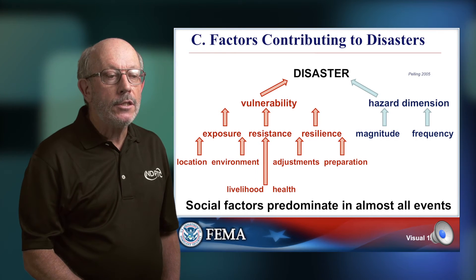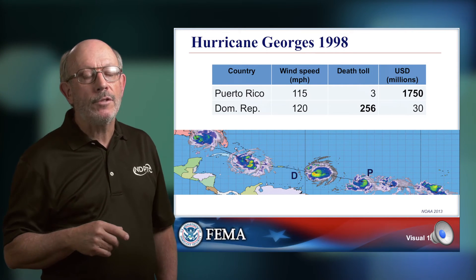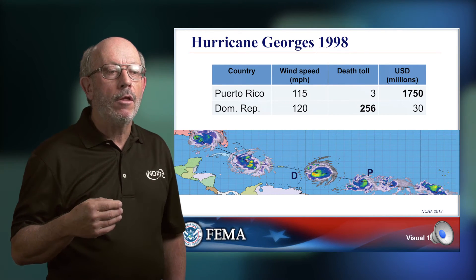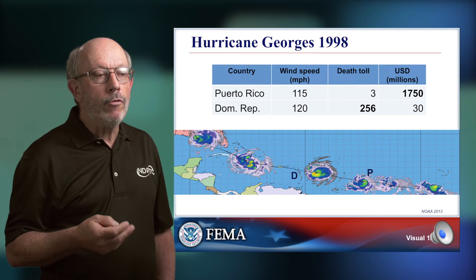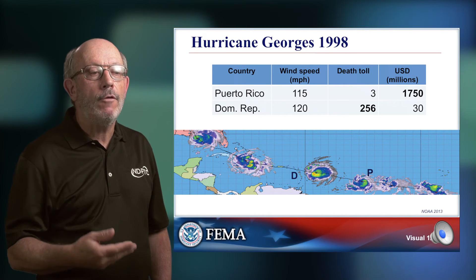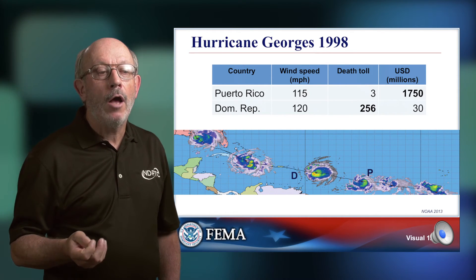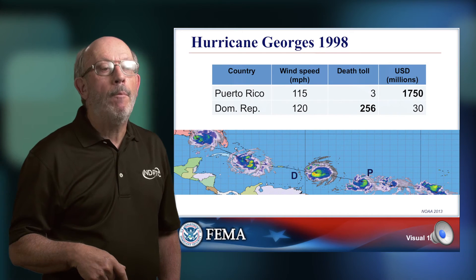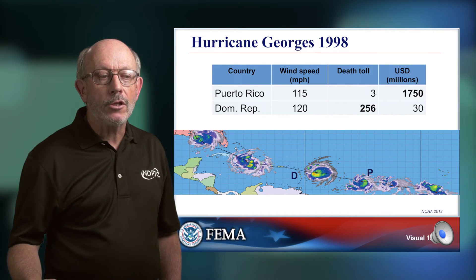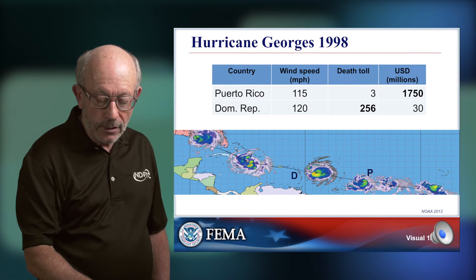The first example is Hurricane Georges in 1998. The hurricane swept through the Caribbean, and comparing its impact when it reached Puerto Rico versus the Dominican Republic — wind speed was barely different, 115 versus 120 miles per hour. But look at the contrast: three deaths in Puerto Rico, 256 in the Dominican Republic. In dollar terms, $1.7 billion in Puerto Rico versus $30 million in the Dominican Republic. This is not driven by the size of the hurricane — it's driven by the social factors that underlie it.